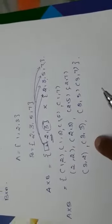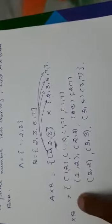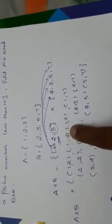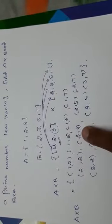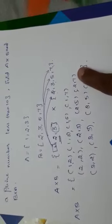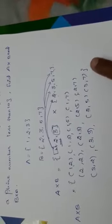Now we have completed writing the ordered pairs. So therefore, A cross B equals (1,2), (1,3), (1,5), (1,7), (2,2), (2,3), (2,5), (2,7), (3,2), (3,3), (3,5), (3,7).